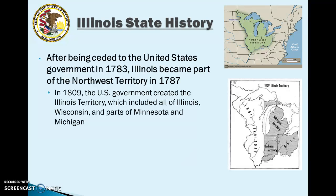You can see the Northwest Territory in the map at the top right. Then in 1809, the US government would create the Illinois Territory, which you can see in the map in the bottom right. The Illinois Territory would include all of Illinois, Wisconsin, and also parts of Minnesota and Michigan. At this point, many states were joining the Union and Illinois would become one of those states relatively quickly.